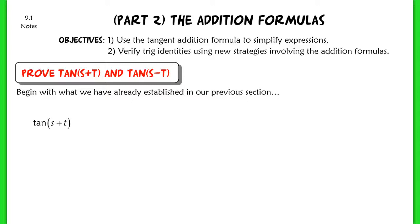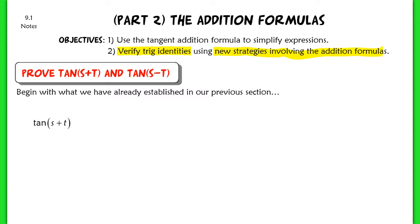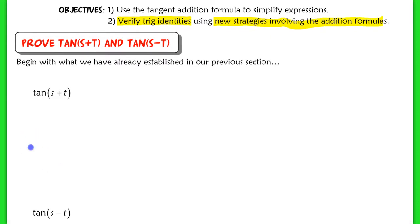This lesson is part two of the addition formulas. The objectives are to use the tangent addition formula to simplify expressions and verify trig identities using new strategies involving the addition formulas. We're going to start with what you've already established in your previous lesson, which was in the prove-it notes.